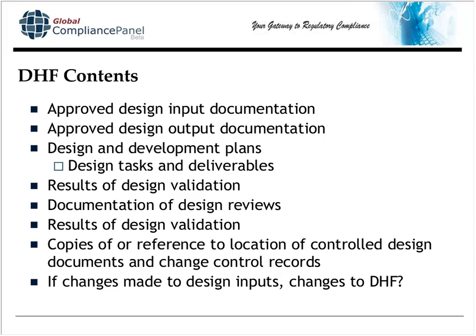The contents of the DHF begins with the design input documentation. During phase review of your design control process, you've got to have these design inputs approved. So at the end of the design input documentation, you'll have signatures — the signatures of the departments that your internal procedure requires, and the FDA inspector will look to make sure you met your own internal requirements. After the input documentation, which is what the device needs to do, is the output documentation, which shows that your device as designed and as manufactured meets the input requirements. I've seen many good matrices in my experience which link inputs to outputs, with each input having a specific reference to the validation or verification that shows a particular input requirement was met.